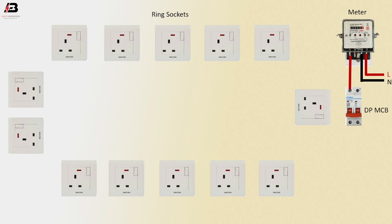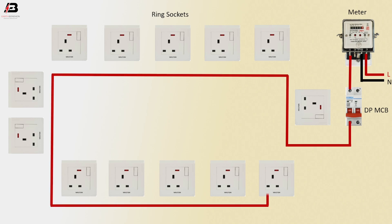Phase connection outgoing from meter to connect DP MCB. Phase connection from DP MCB to connect all socket board phase points. Please be careful to connect the line.